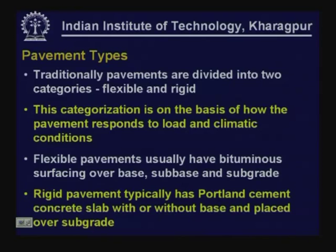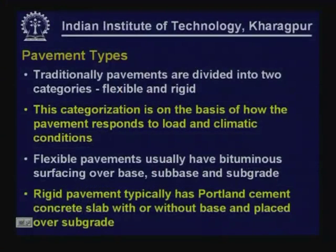This categorization is mainly on the basis of how the pavement materials or pavement as a whole responds to load and climatic conditions. Flexible pavements usually have bituminous surfacing over granular base and granular sub-base, which in turn are placed over subgrade. There will be flexible pavements without bituminous surfacing also — you will have subgrade, sub-base (either both or one of them), and as a surfacing it may be either bituminous or simply granular. It can come in other combinations also.